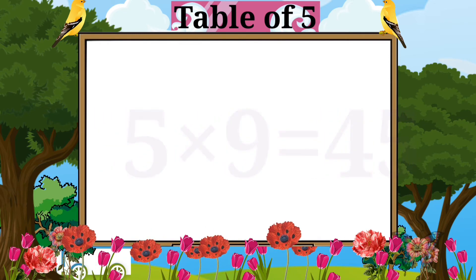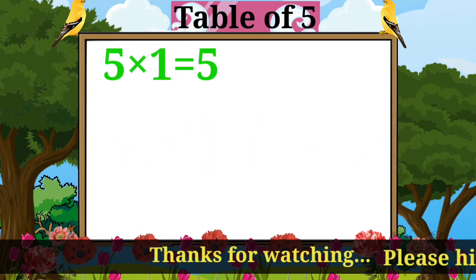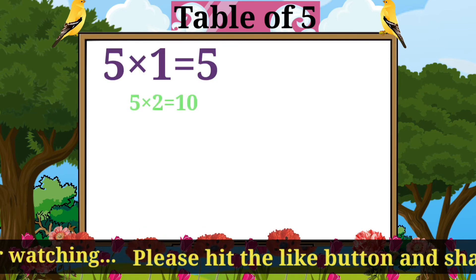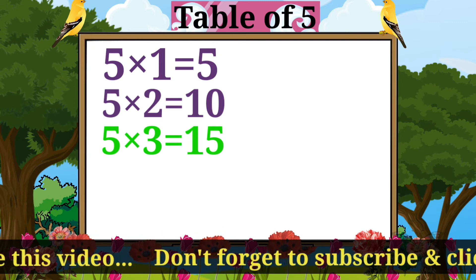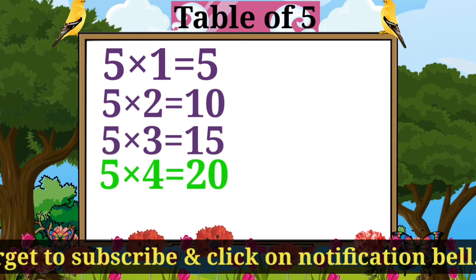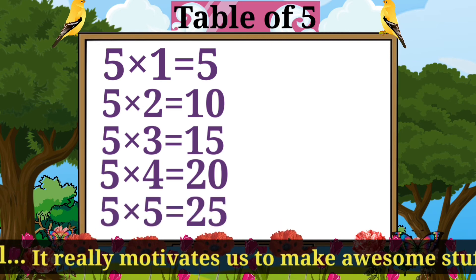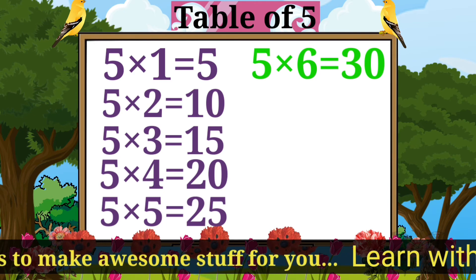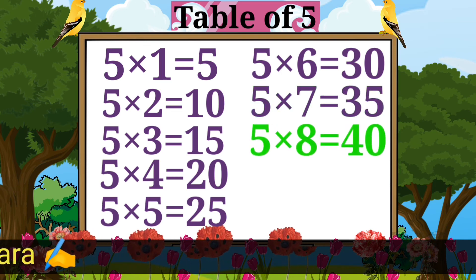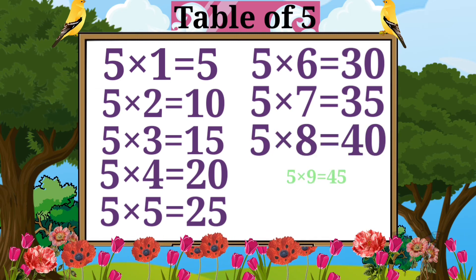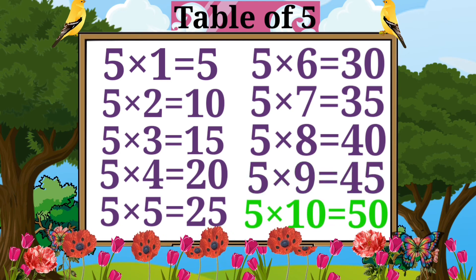Five tens are fifty. Five ones are five. Five twos are ten. Five threes are fifteen. Five fours are twenty. Five fives are twenty-five. Five sixes are thirty. Five sevens are thirty-five. Five eights are forty. Five nines are forty-five. Five tens are fifty.